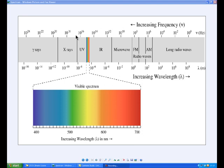This is a diagram I've just taken off the internet. It shows that if you increase the frequency, you decrease the wavelength. So if the frequency is very high, the wavelength is very, very short. And if the frequency is very low, then the wavelength is very long.